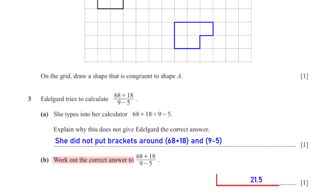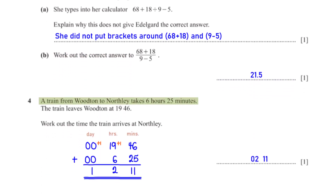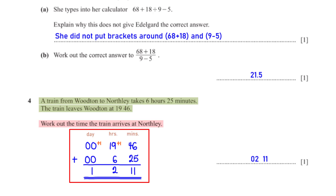A train from Woodton to Northly takes 6 hours 25 minutes. The train leaves Woodton at 19:46. To get the arrival time we add 6 hours 25 minutes to 19:46. Under the minutes column: 46 plus 25 is 71; 60 minutes is one hour, so we add 1 to the hour column and leave 11 minutes. Under the hours column: 1 plus 19 plus 6 is 26; 24 hours is one day, so we leave 2 hours. The train arrives the next day at 02:11.